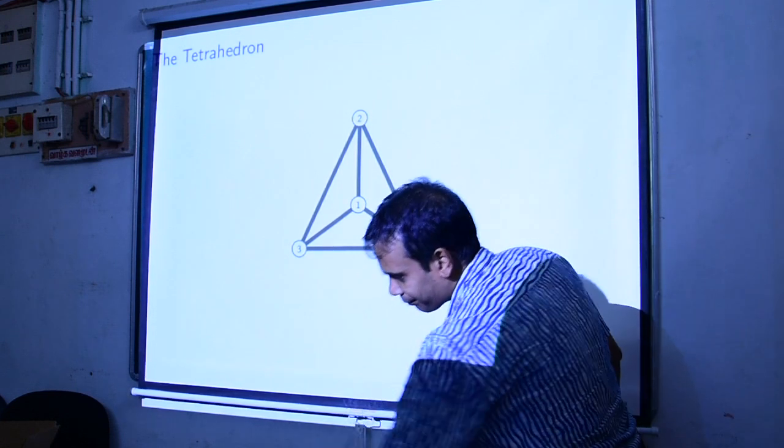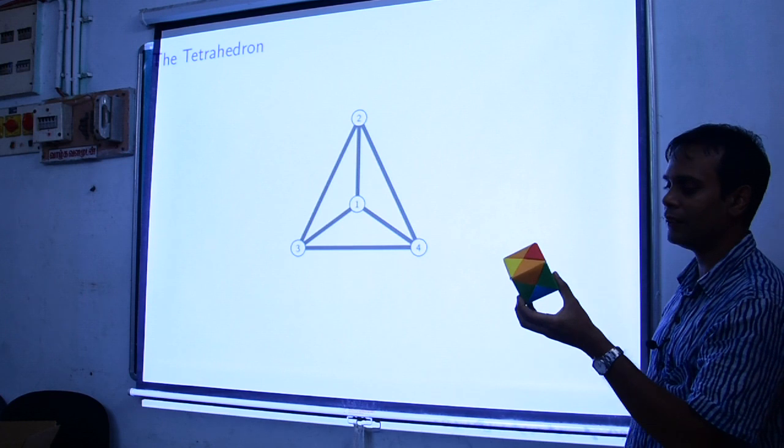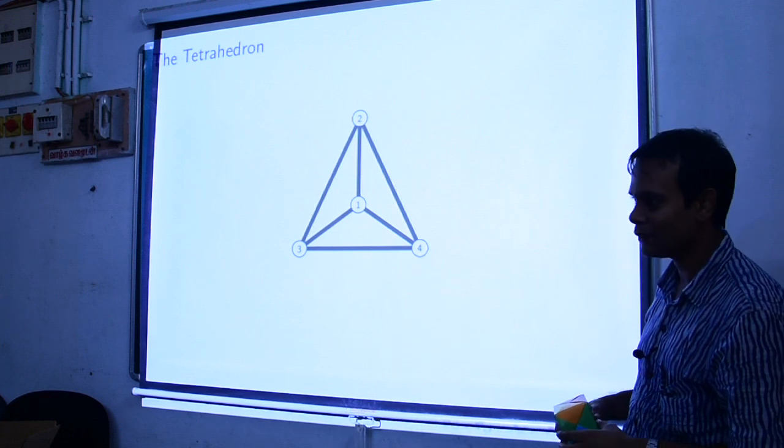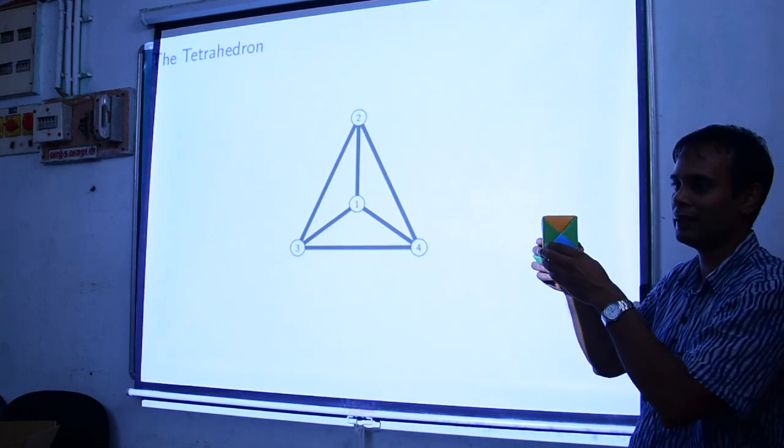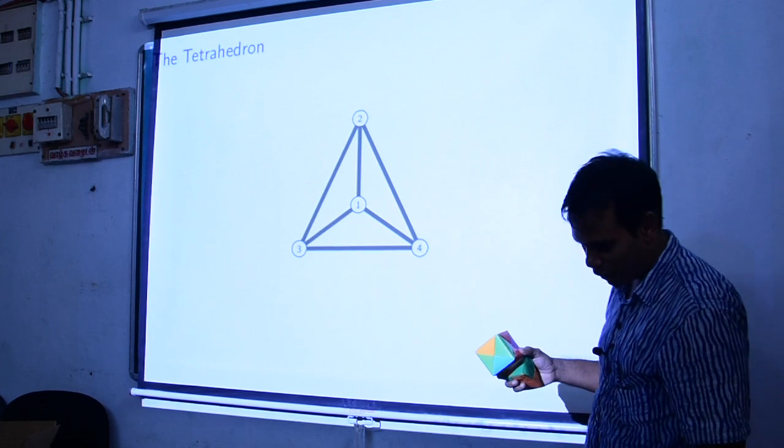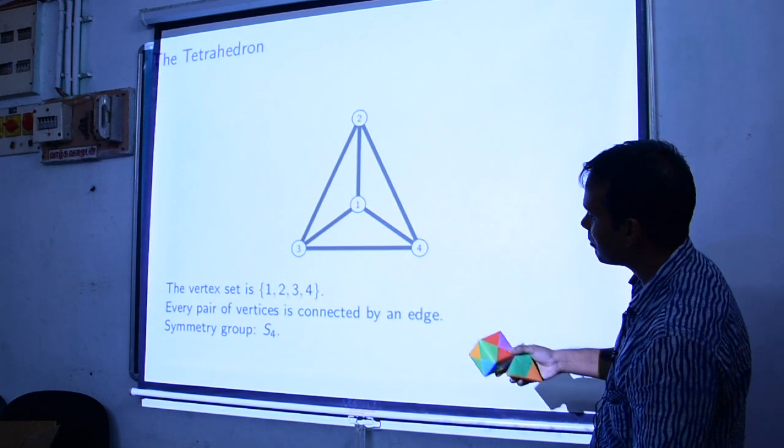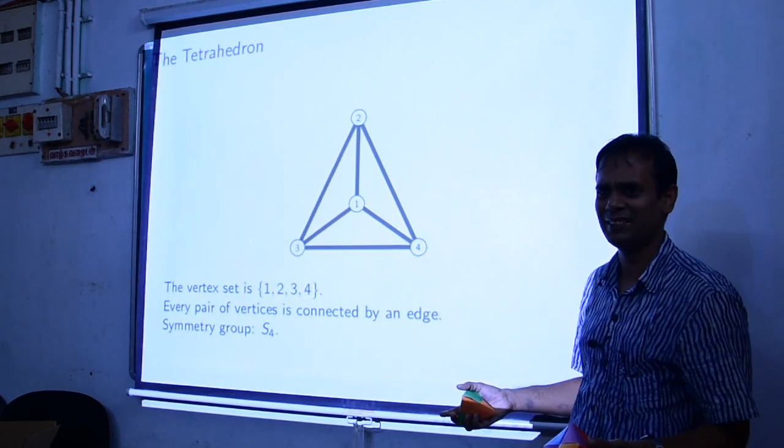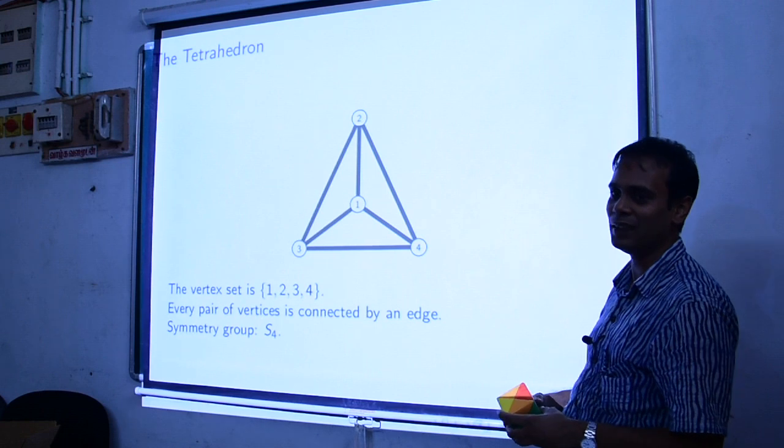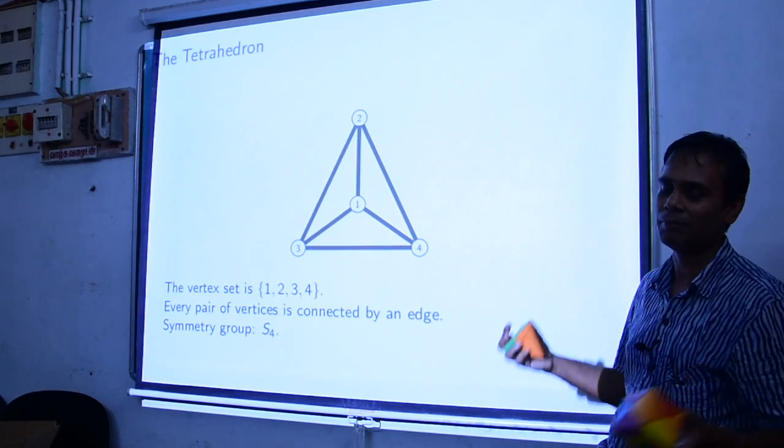So, what about the cube? So, the cube has eight vertices. So, let's just see how to draw this. Eight, four in front, four at the back. Eight vertices. So, let's see how we can draw them as a graph. So, here's one. This symmetry group, I don't know. How many of you know group theory? Most of them know group theory. Then you know what I mean by this. So, the symmetry group is S4. It's all permutations of the numbers 1, 2, 3, 4.